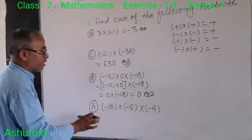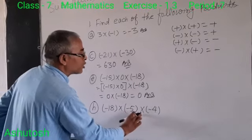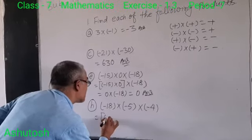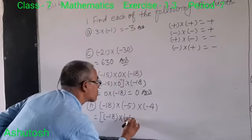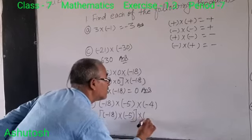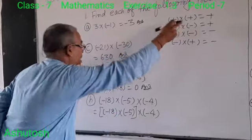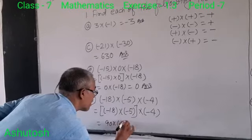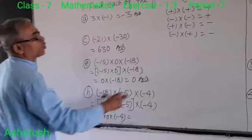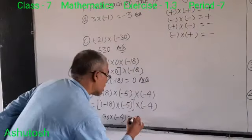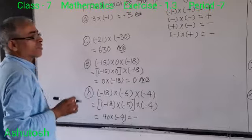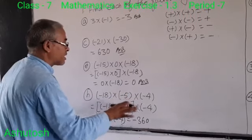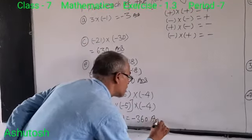Next question, question number H: minus 18 into minus 5 into minus 4. First we take two integers: minus 18 into minus 5. Minus into minus is plus, therefore 18 into 5 is 90. So we get plus 90. Again 90 multiply minus 4: plus into minus is equal to minus, therefore minus 90 into 4 is 360. So the product of those integers is equal to minus 360.